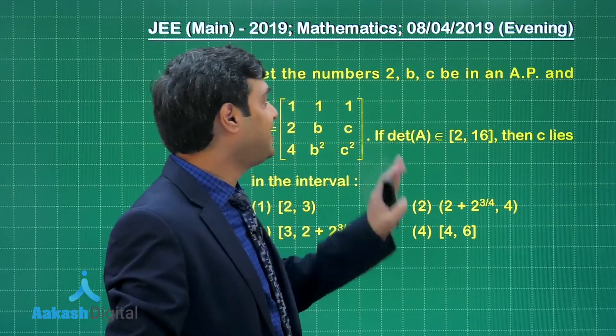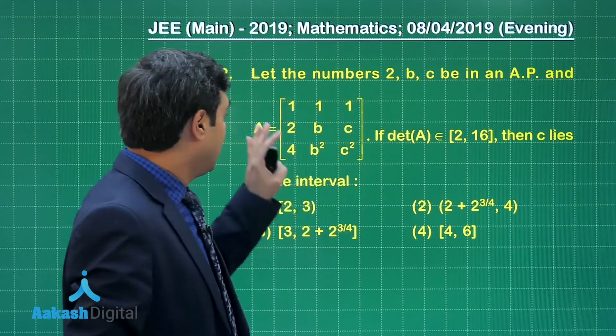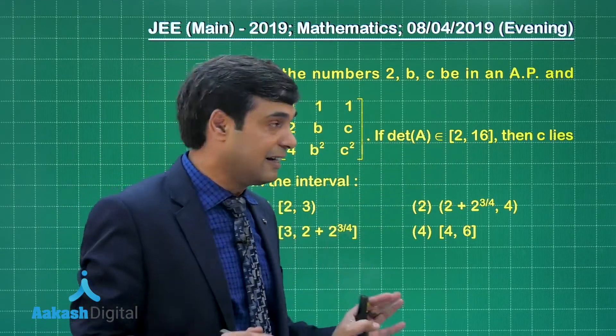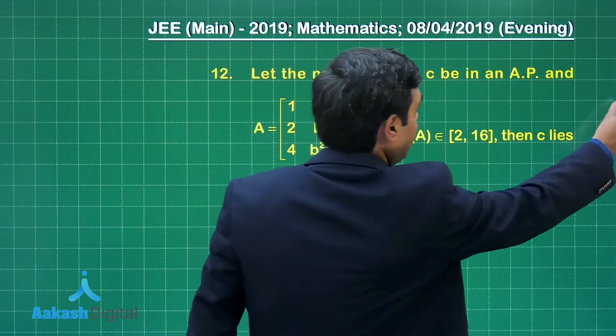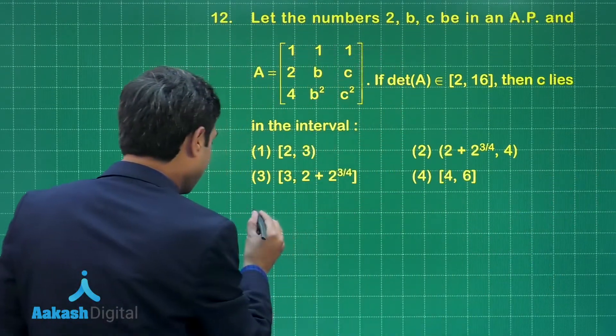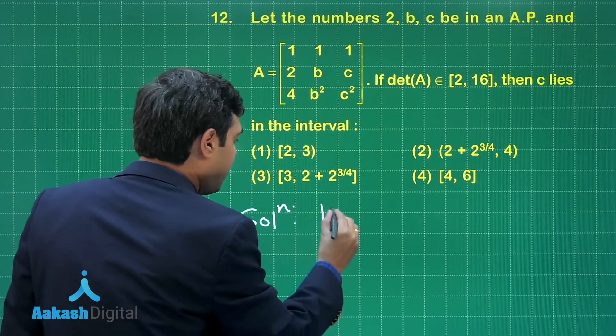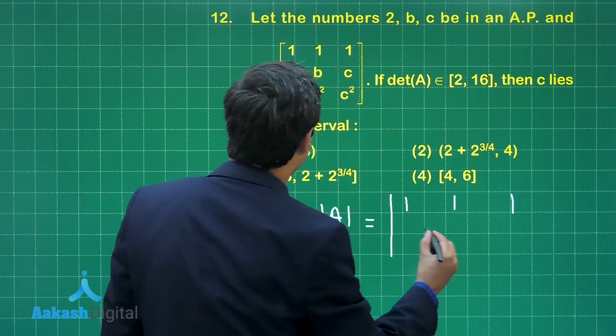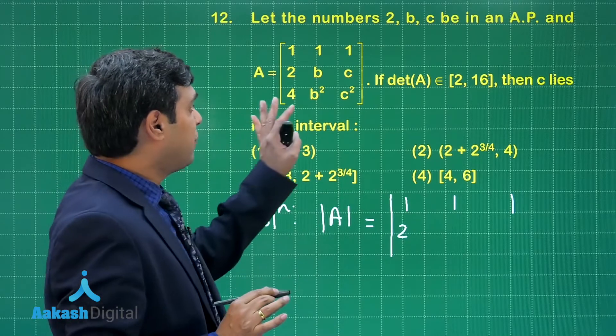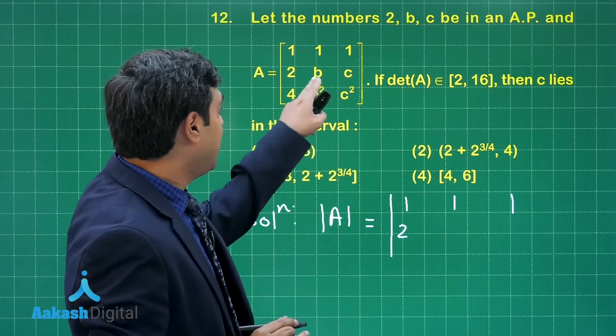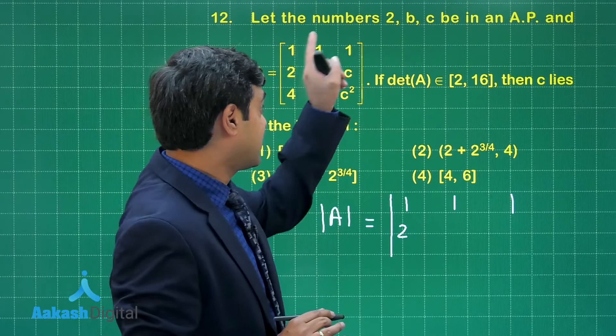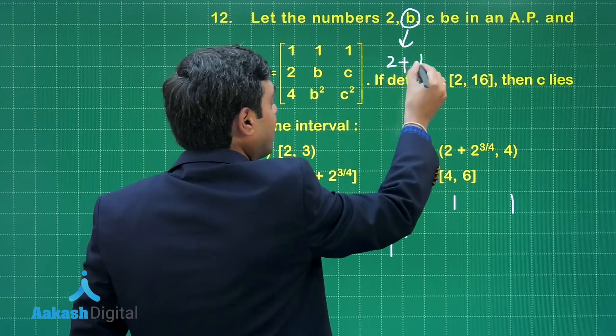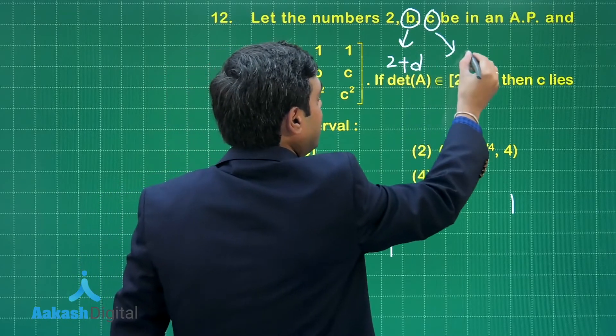Let the numbers 2, B, C be in AP. A matrix given. If determinant A is lying in the interval [2, 16] both inclusive, then C lies in the interval. So let us start this question. Determinant A is equal to determinant of |1, 1, 1; 2, B, C; 4, B², C²|. Let us see, common difference is D, then we can say B is 2 + D because it is given 2, B, C are in AP. So I can write B as 2 + D and C as 2 + 2D.